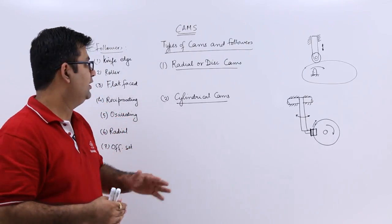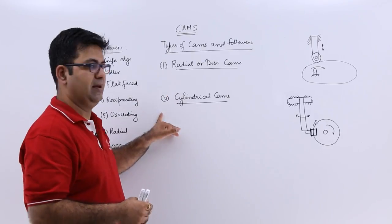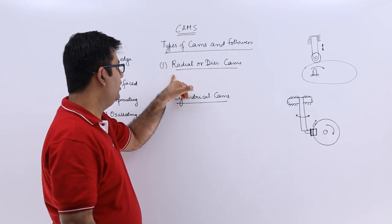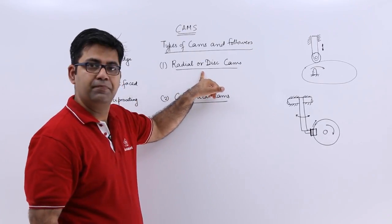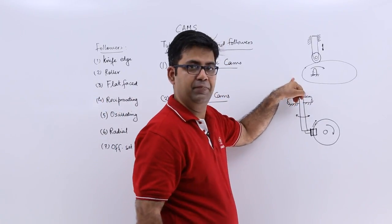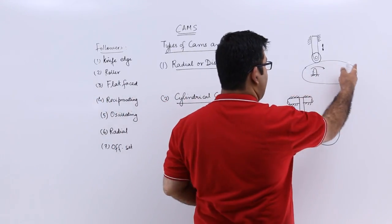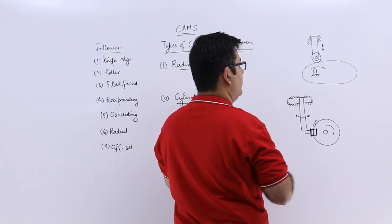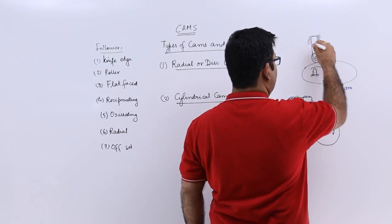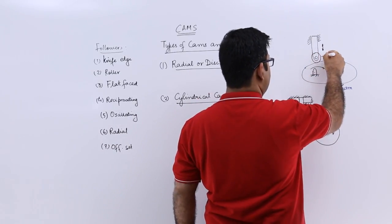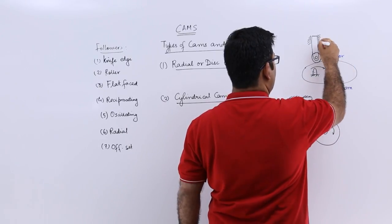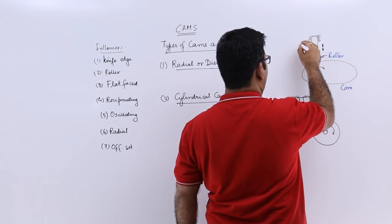Depending on that, there are types of cams. The very first type is the radial or disc cam. This is the form of a radial cam — this is the cam, this is the roller, and this is the follower.